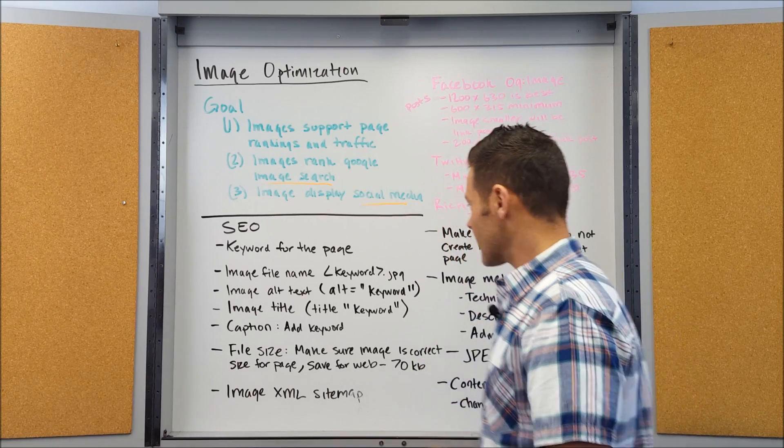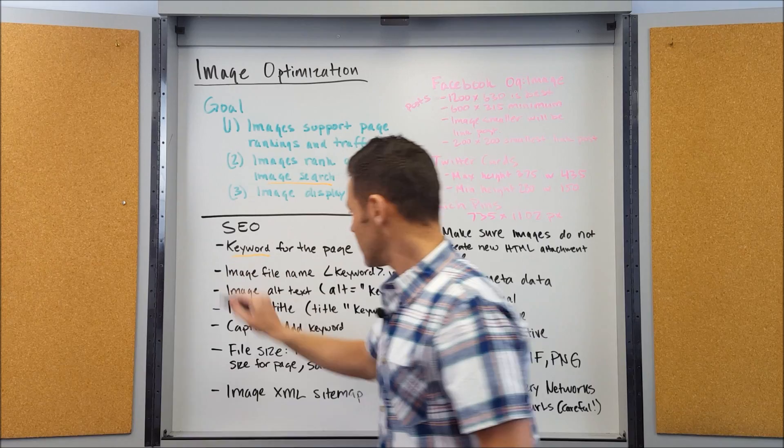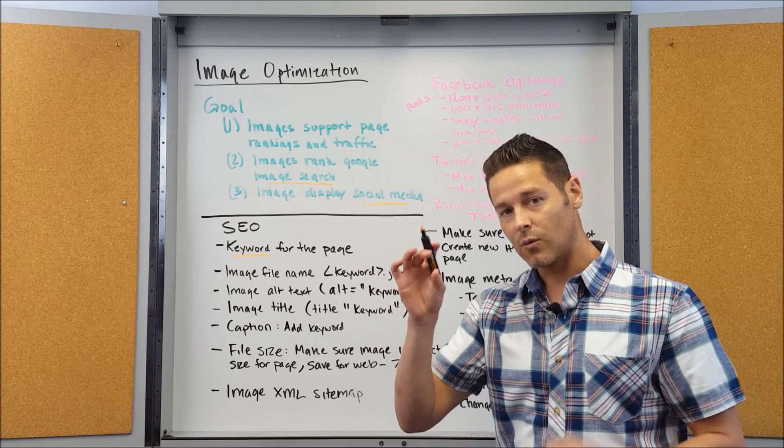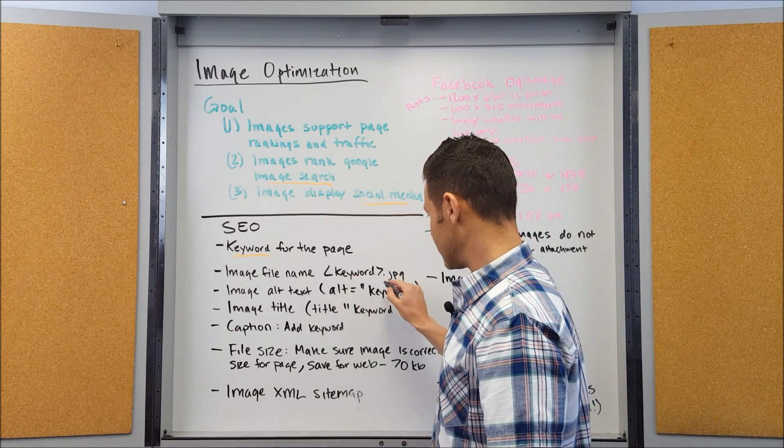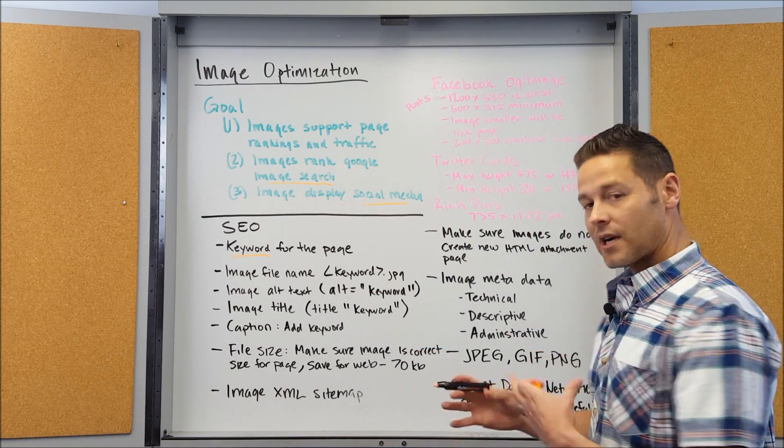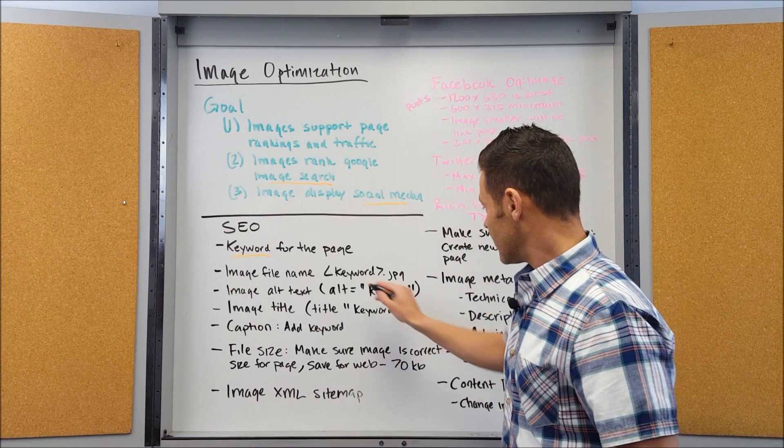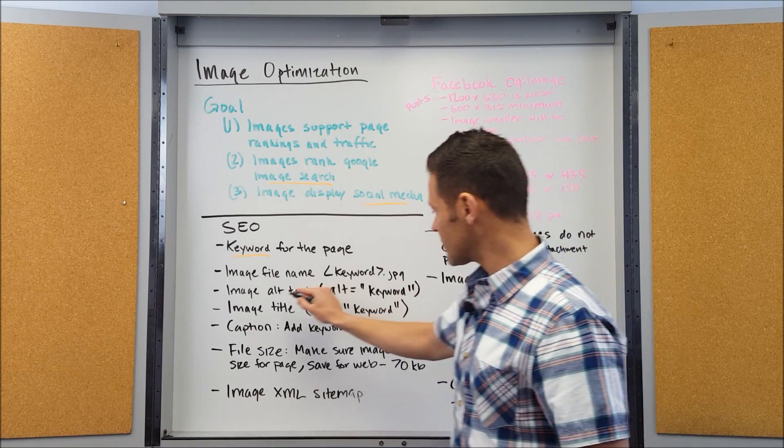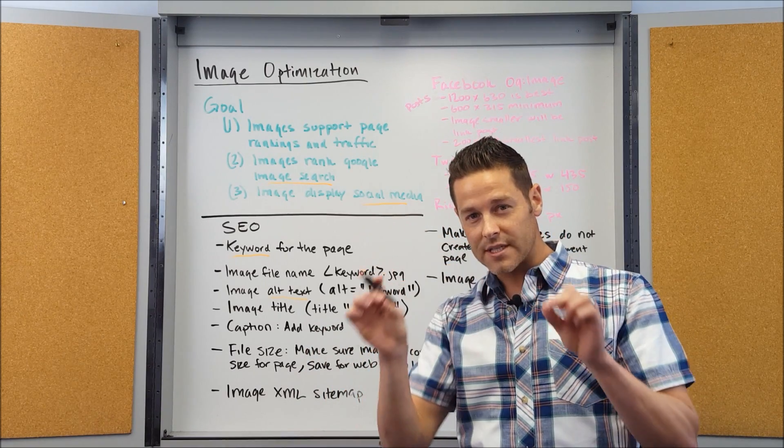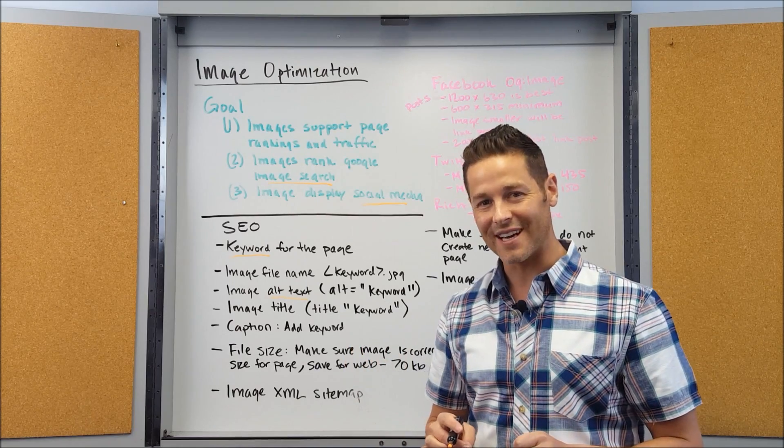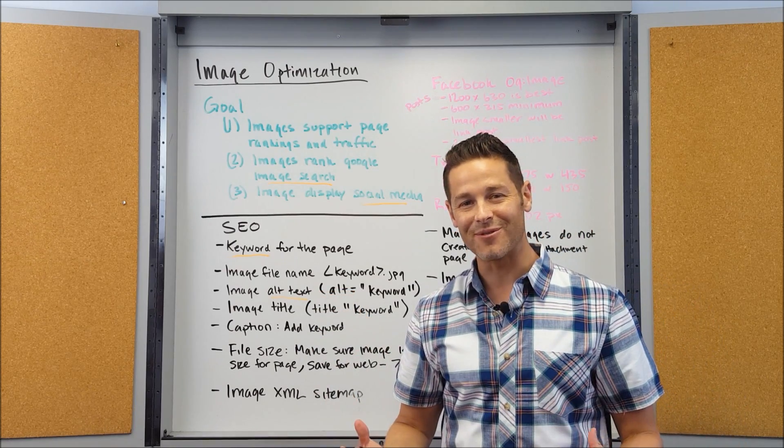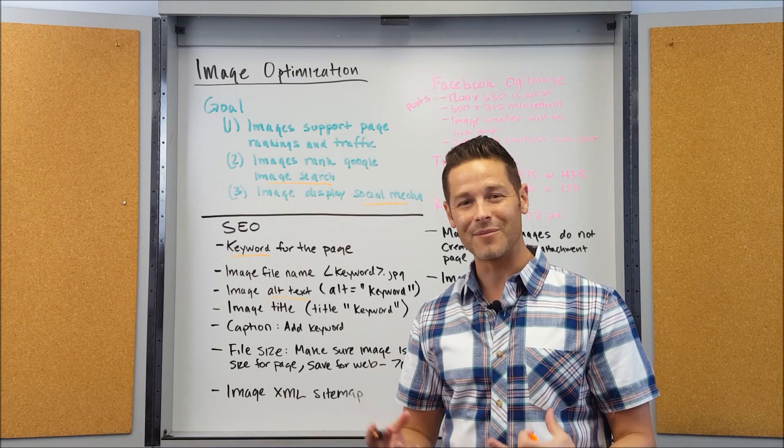When it comes to SEO, the first thing you want to do is make sure you know what your keyword is for the page. Take that term and work it into your image file name, so it would be keyword dot JPEG or GIF or PNG, those are the main file types for images. You also want to put it into the alt text. The alt text is when you hover over an image, that's what shows up. You want to make sure that your keyword is in the alternate text and that the text is descriptive.